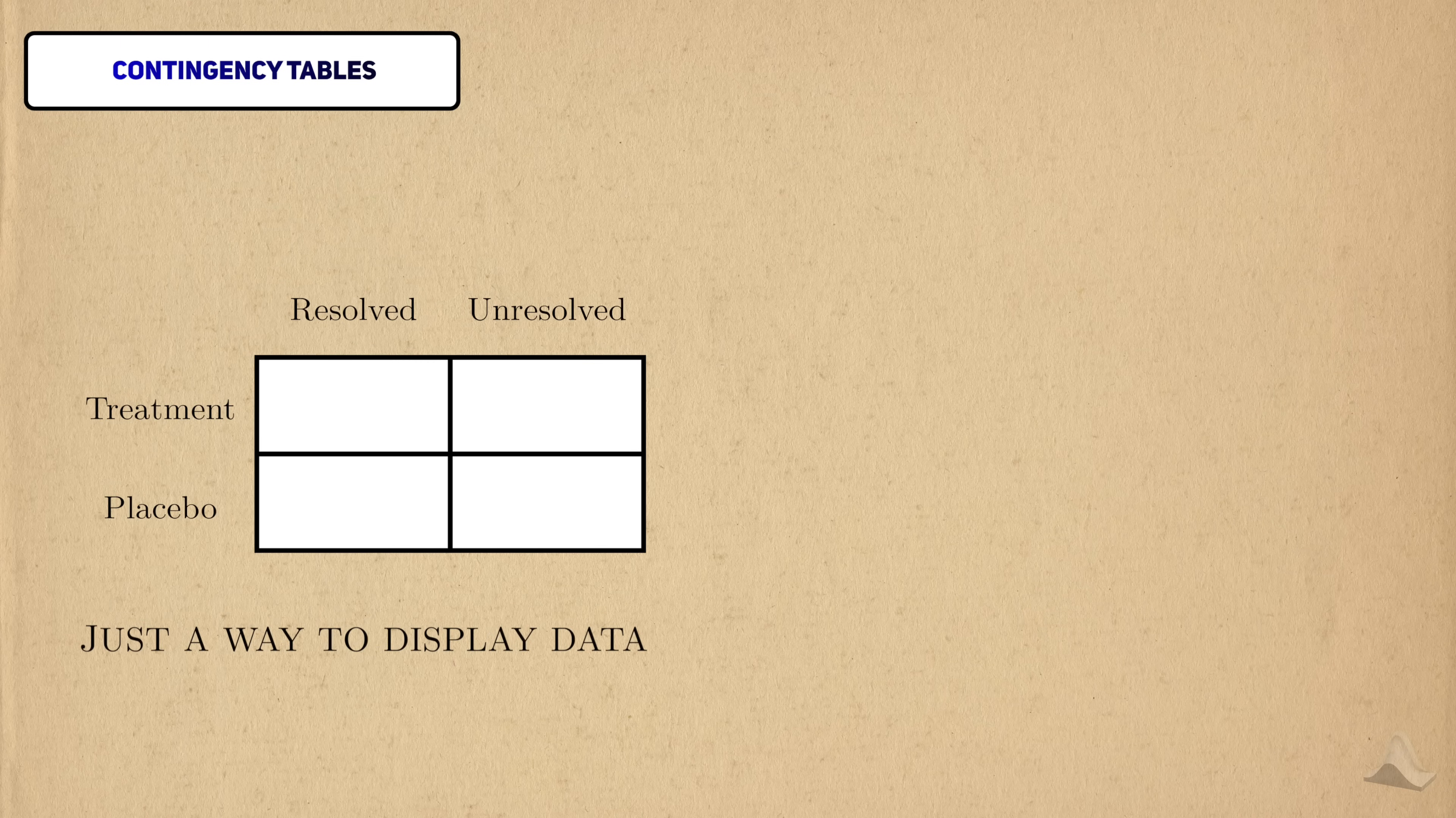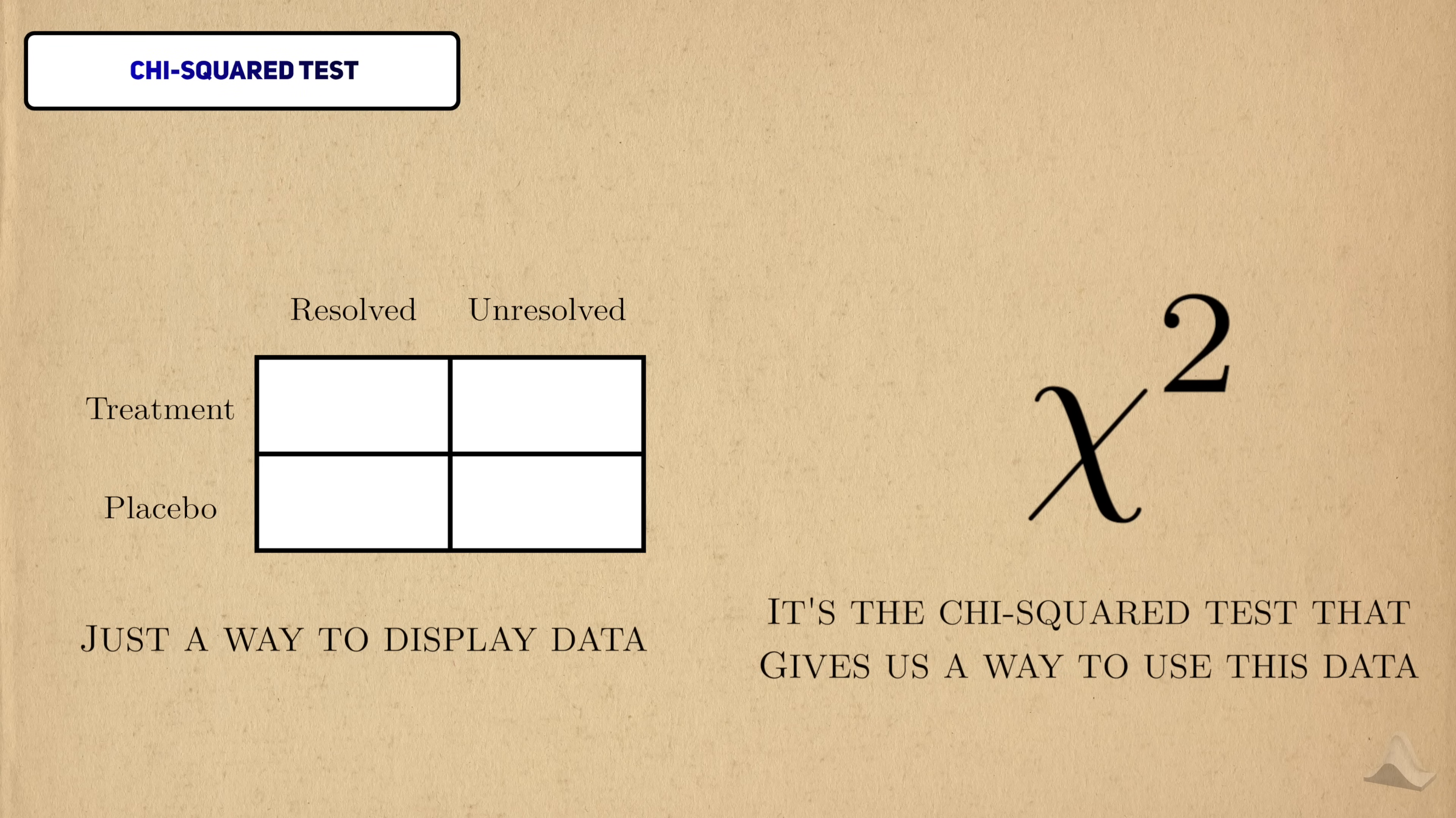A contingency table is just a convenient, easy-to-read format for displaying data. It's the chi-squared test that gives us a way to use the data from a contingency table in a meaningful way. Let's dig into that.